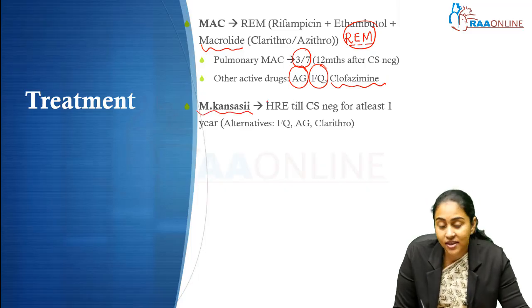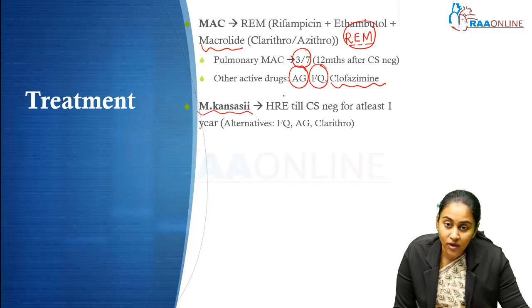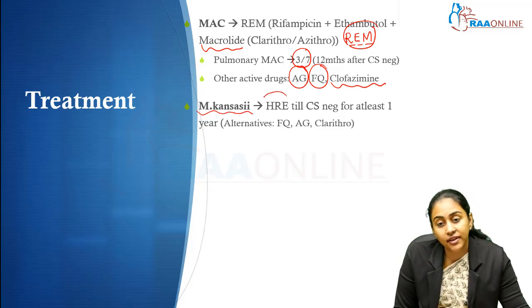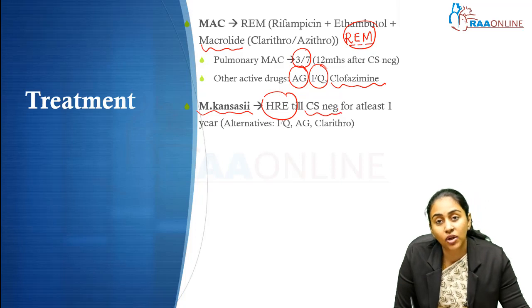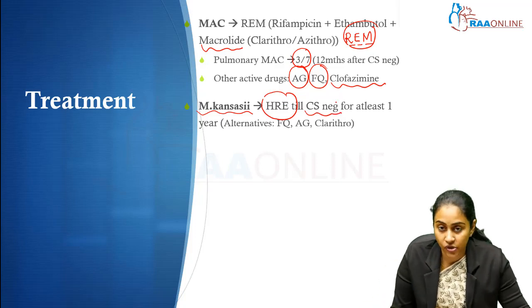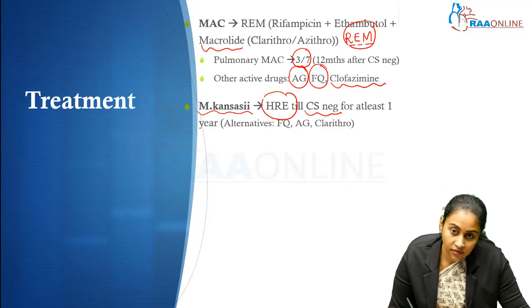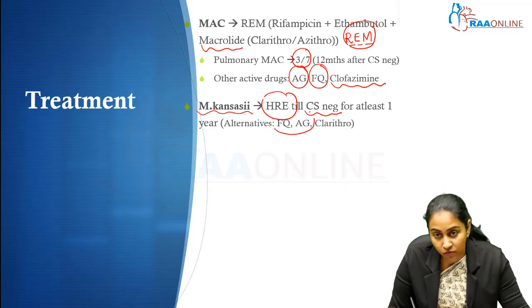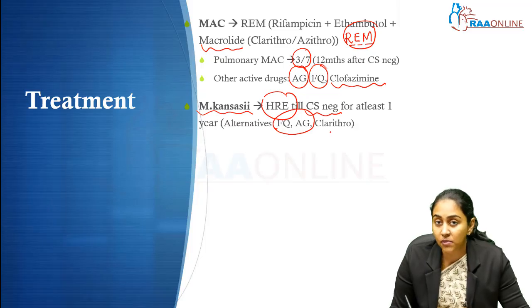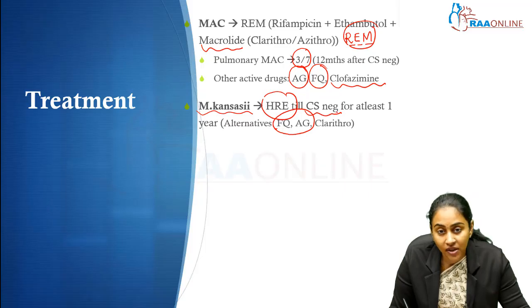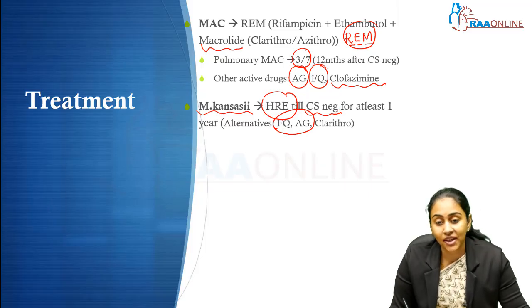Coming to Kansasii, it is just like TB. We are going to use all the first-line ATT drugs except pyrazinamide (Z) — so HRE until culture negative, for at least one year after culture negativity. The alternatives are going to be fluoroquinolone, aminoglycoside, and clarithromycin. So macrolide is a good alternative for Kansasii, but the first-line treatment is HRE. For MAC it is the macrolide-based REM regimen; for Kansasii it is the HRE regimen.